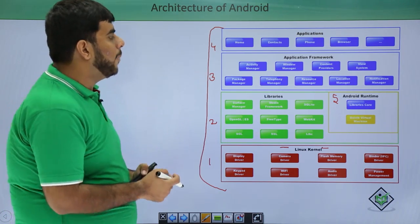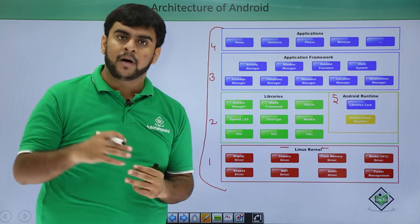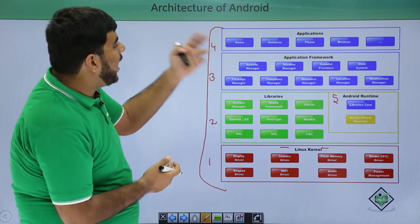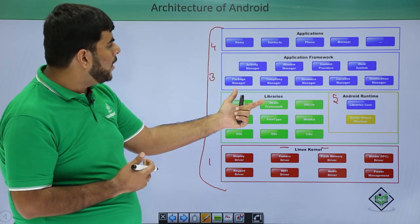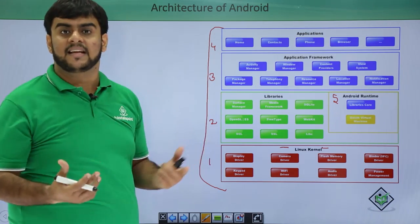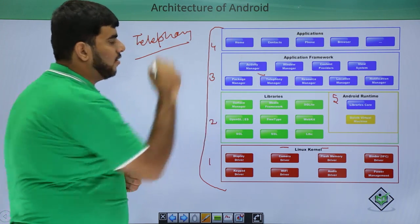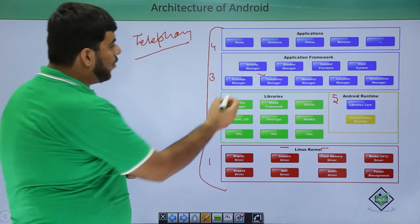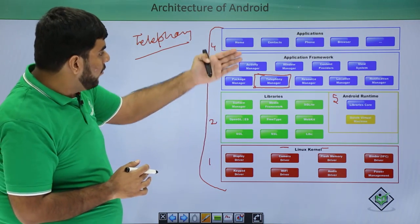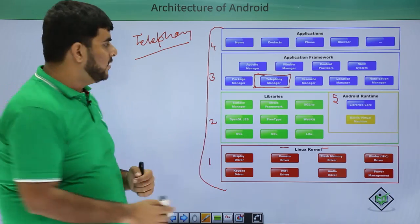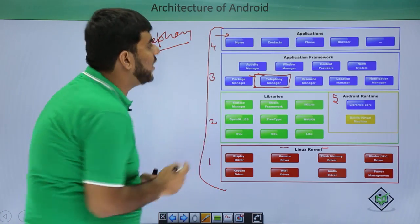In the third layer we have the application framework. These are basically a group of instances put together to make things easier for developers. For example, we have an Activity Manager or a Telephony Manager. The Telephony Manager's role would be to handle calls, SMS, and things related to telephony. As a developer, when we develop applications we use this Telephony Manager and don't need to go deeper into libraries or the kernel.